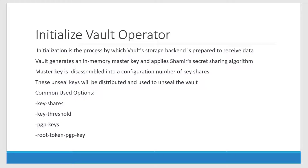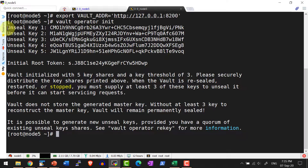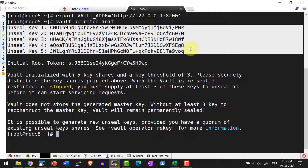Now let me initialize the vault. I will use the command `vault operator init`. As discussed earlier, initializing is the process by which vault's storage backend will be prepared to receive data. It is going to generate an in-memory master key — it will not get stored anywhere — and it is going to apply Shamir's Secret Sharing algorithm and provide the master key in disassembled format into n number of parts, which will be used to unseal the vault.